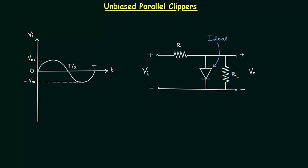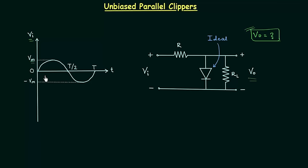In this lecture I will solve one problem based on unbiased parallel clippers. We need to calculate the output voltage Vo for the sinusoidal input, and once we have the value of output voltage we will plot the output waveform. Vi is the input voltage and Vm is the maximum or peak value. This circuit is called an unbiased clipper because there is no additional DC voltage source present, and a parallel clipper because the diode is connected in parallel with the load resistance.